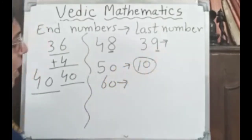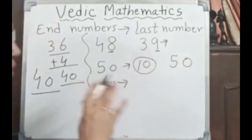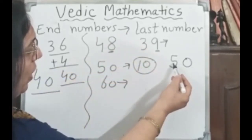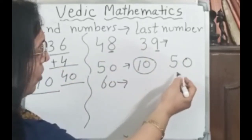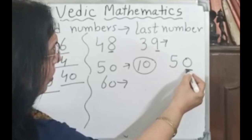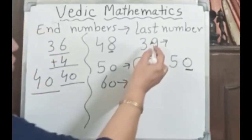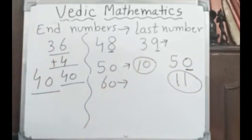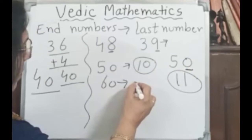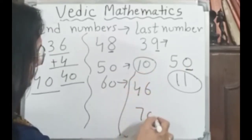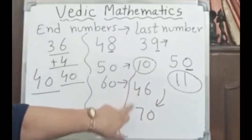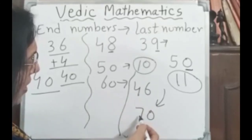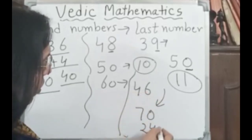Now look here — the number is thirty-nine. What do you add to thirty-nine to make it fifty? Focus on the last number. Take ten: ten minus nine is one, and four minus three is one, so we add eleven. Suppose we have forty-six — what number do we add to make it seventy? Ten minus six is four, and six minus four is two, so we add twenty-four. This is fast calculation — just use tricks and use your mind to do Vedic Mathematics.